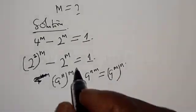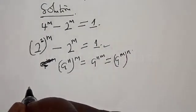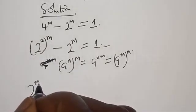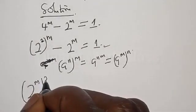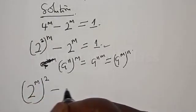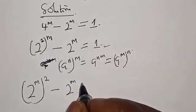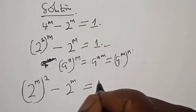Then from here, we have 2 raised to power m squared, minus 2 raised to power m, equal to 1.